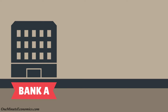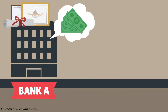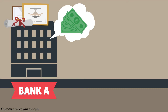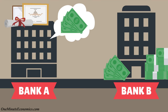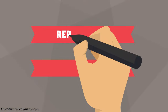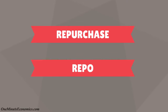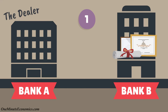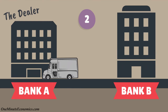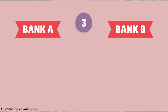Let's assume Bank A needs cash quickly and owns a bunch of assets — bonds in our case. Bank B, on the other hand, has excess cash and wants to put it to good use. In such cases, Bank A can engage in a so-called repurchase or repo agreement, which works like this: Bank A, called the dealer, gives the bonds it owns to Bank B and agrees to buy them back at a later date — usually very quickly, for example the next day. Bank B then gives Bank A the cash it needs.